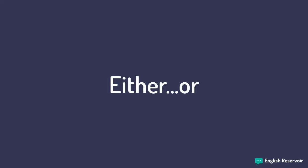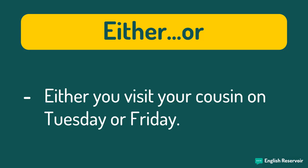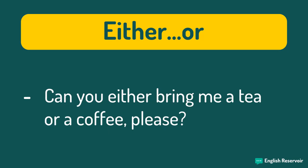Either or. We use this combination when we have two choices or options — we can choose one of them. This one definitely comes in handy. Either you visit your cousin on Tuesday or Friday. Here you can choose if you visit your cousin on Tuesday or Friday. Can you either bring me a tea or a coffee, please? The two choices are tea and coffee. Remember: use either or when you want to present a choice between two options.